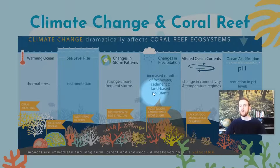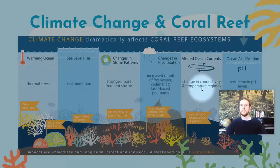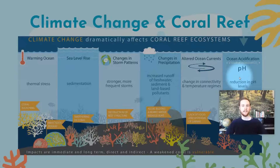Changes in precipitation can increase runoff of freshwater from melting ice caps or increased rainfall, diluting the salinity of the water and changing the habitat for organisms that rely on salty ocean water. Altered ocean currents can change the flow of waves, redistribute nutrients, heat, and sediments, disrupting ecosystems uniquely adapted to existing current patterns. Finally, ocean acidification — as the ocean decreases in pH and becomes more acidic — is a threat to the actual structure and the ability of coral to build the reef, which will be covered in an entire dedicated video.